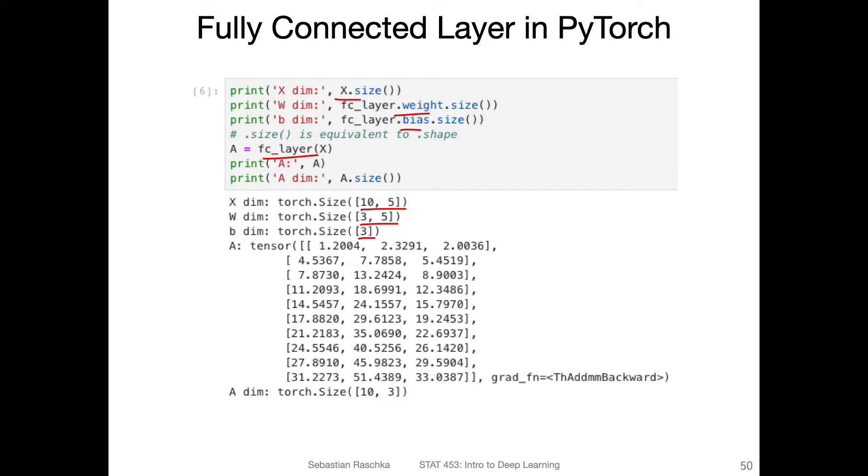Now I'm applying this fully connected layer to this x, which is 10 times 5, and the w, which is 3 times 5. That is also plus b. This is a matrix multiplication plus b, which is three dimensional. The output is 10 times 3 dimensional, a is 10 times 3 dimensional matrix.